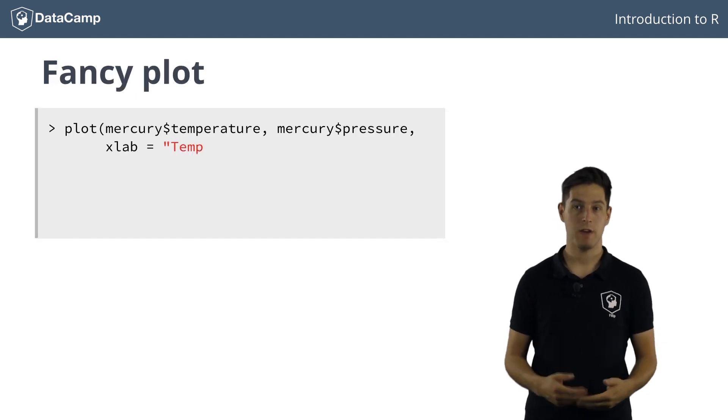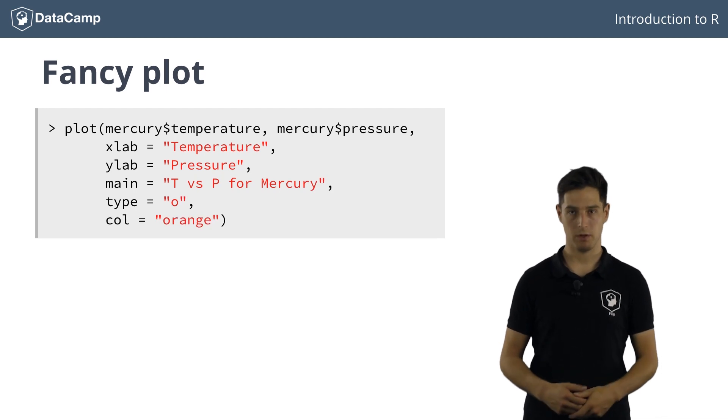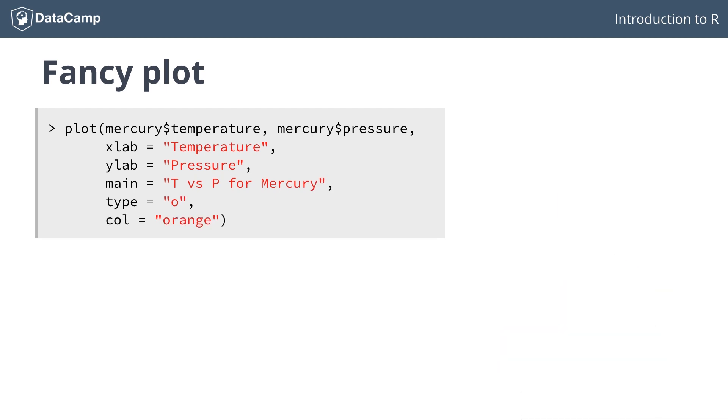Have a look at this code that specifies a bunch of arguments inside the plot function. The result looks like this. Can you tell which arguments led to which changes in the plot?